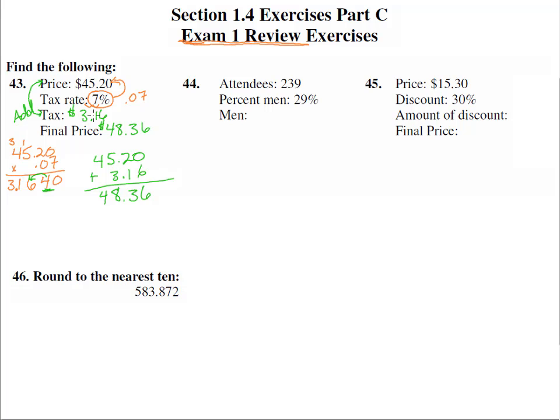Next problem: the attendees were 239, so there are 239 people that attended. 29% were men, that means 71% were women. So how many men? We must take this percent and go of the original. Remember that will be two decimal places, one two, so that's 0.29.